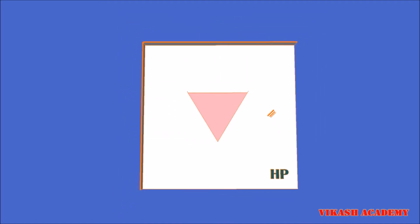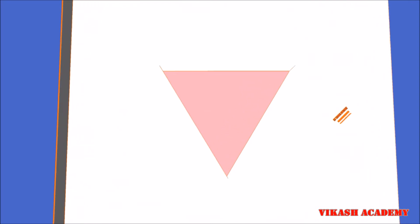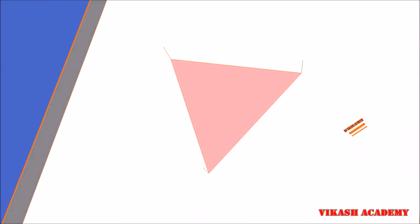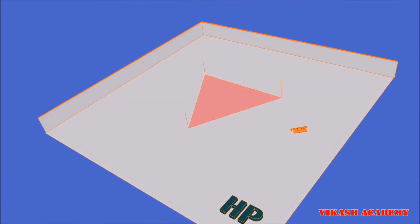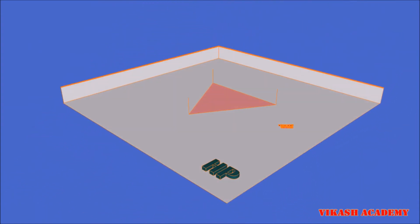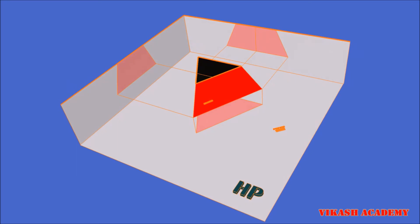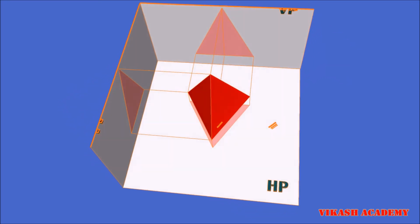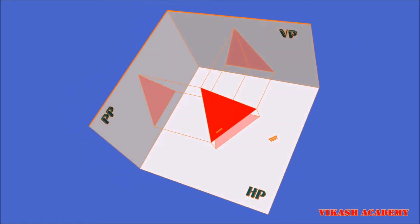This is because of the projector lines drawn from the triangular base of this pyramid to the horizontal plane. By doing so, you will obtain three points on the horizontal plane, and when you join those points on the horizontal plane we will finally obtain a triangle on the horizontal plane.